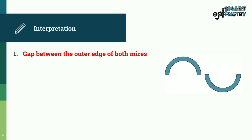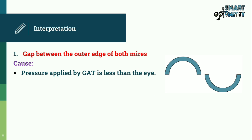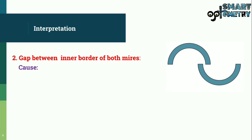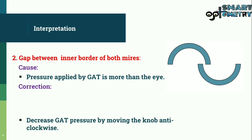At least three readings should be taken and their variation should not be more than 1 mmHg. Interpretation: a gap between the outer edges of both mires means the pressure applied by GAT is less than the eye pressure — correct by increasing GAT pressure by moving the knob clockwise. A gap between the inner borders of both mires means the pressure is more than the eye — correct by decreasing GAT pressure by moving the knob anti-clockwise.